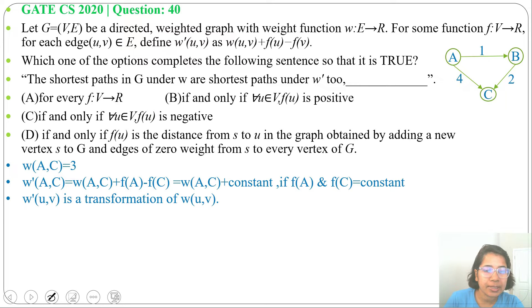Now let's check options. Option A: for every F: V tends to R. This is true. For every vertex, it will be true.